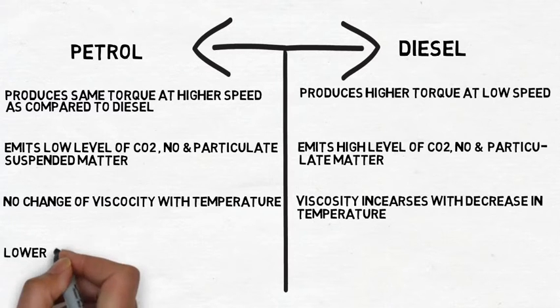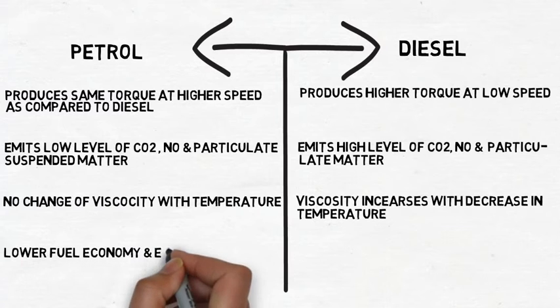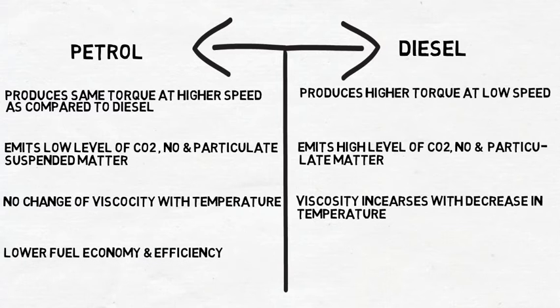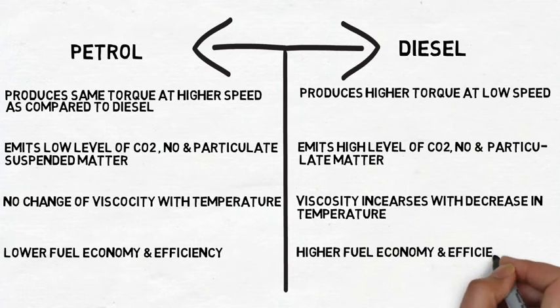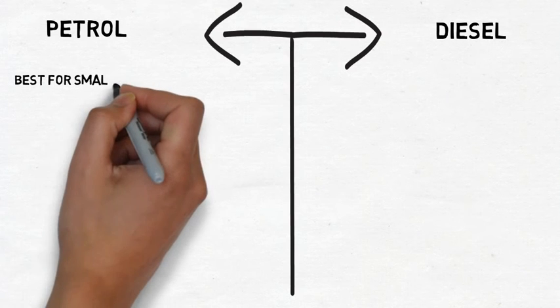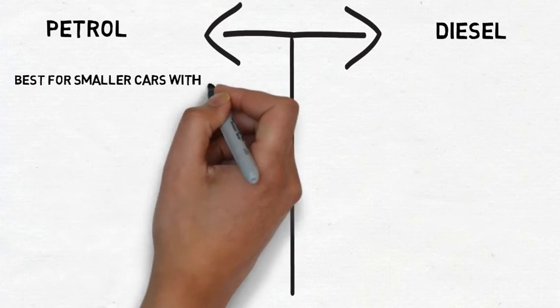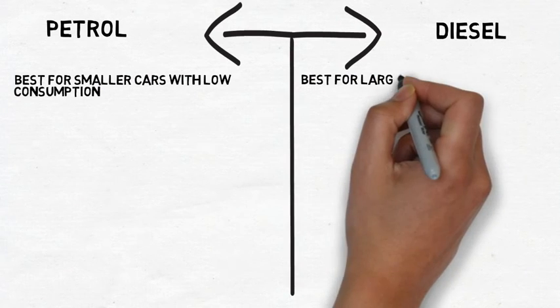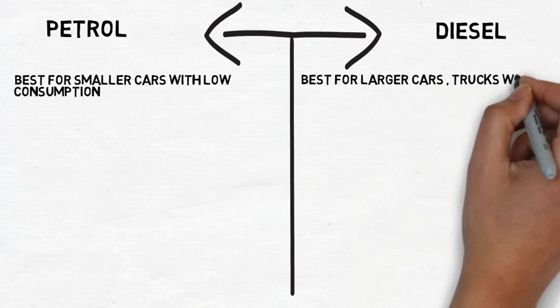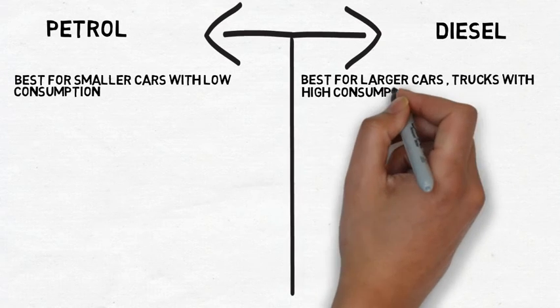Petrol has lower fuel economy and efficiency while diesel has higher fuel economy and efficiency. Petrol is best suited for smaller cars with low consumption, while diesel is best suited for larger cars and trucks with higher consumption.